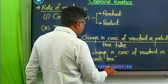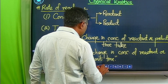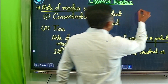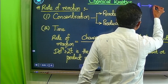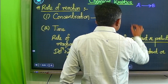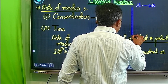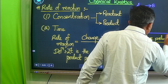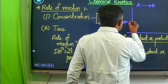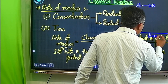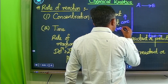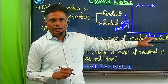All these things are based on a graph. Whenever any chemical reaction proceeds, let us say you have the general chemical reaction A gives B. I will plot the graph between concentration against time. Here the concentration is in mole per liter and time is in seconds.